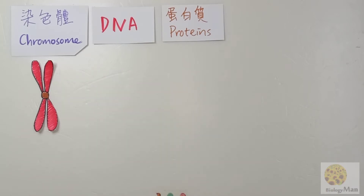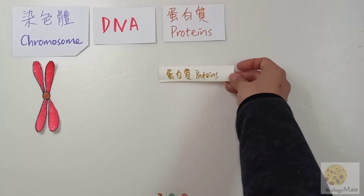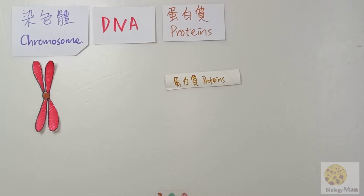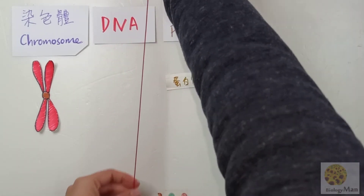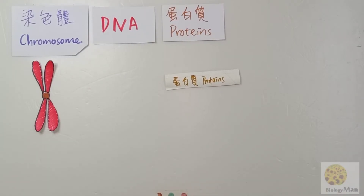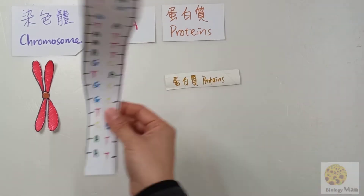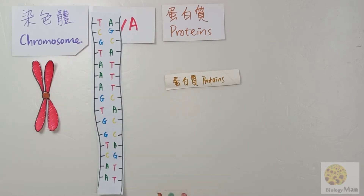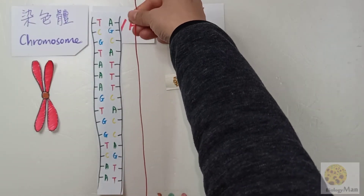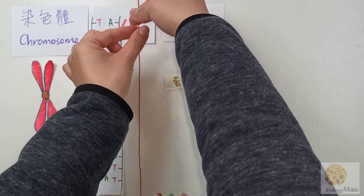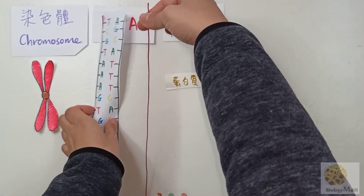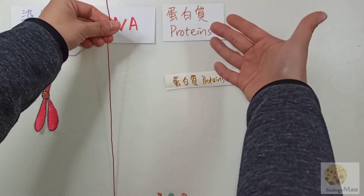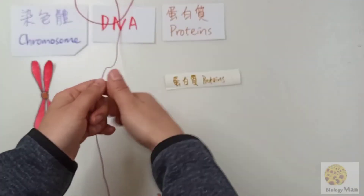That is what we are going to talk about. In order to help you understand the concept better, I will use this paper to represent the proteins and this red string to represent the DNA. Let me remind you that the structure of DNA is a double helix containing two nucleic acid strands. I'll use a single string to represent this double helix.